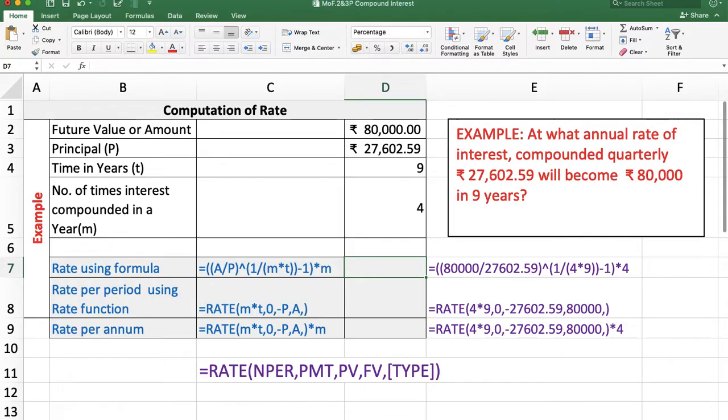Now we'll talk about how to calculate rate. In this example, at what annual rate of interest compounded quarterly will ₹27,602.59 become ₹80,000 in 9 years? Here, amount is ₹80,000, principal is ₹27,602.59, time is 9 years, and M is 4 because interest is compounded quarterly.